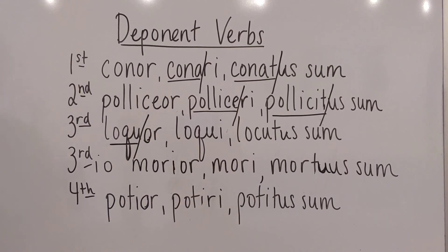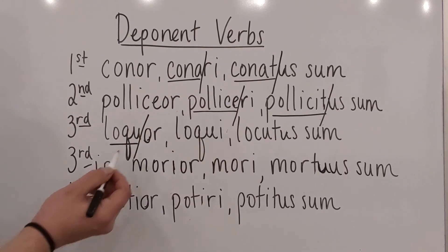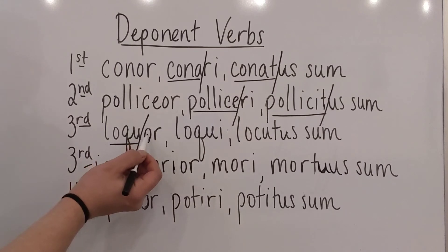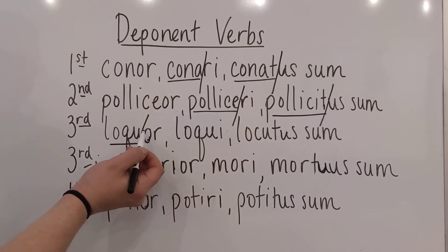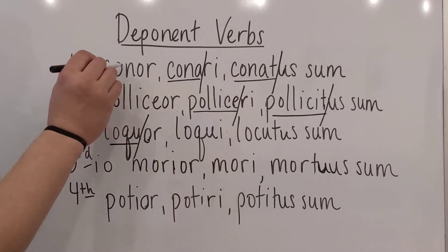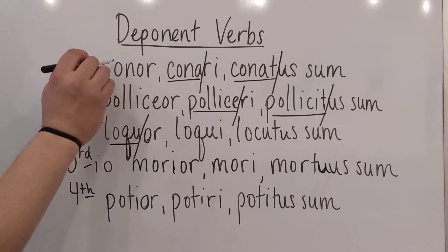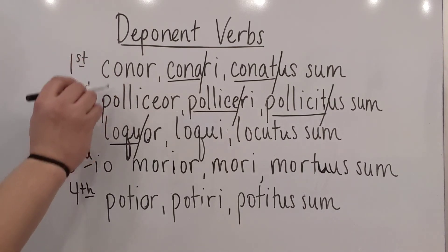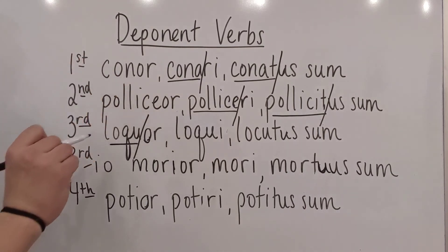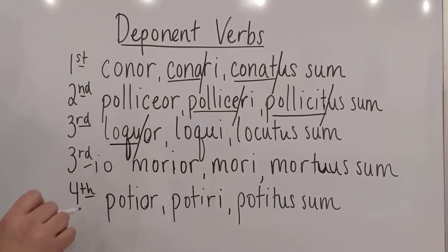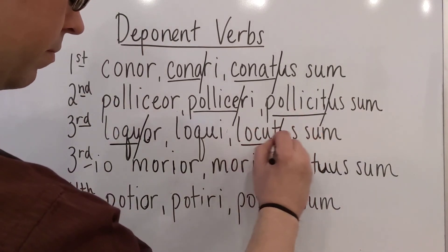So: -i, -e, -u, -e before the -ba. Do not use -bo, -bis, -bit, or -bor, -beris, -bitur for these forms. Use -bor, -beris, -bitur for the future for first and second conjugation — not for third, third io, or fourth. And then the supine stem is locut-.